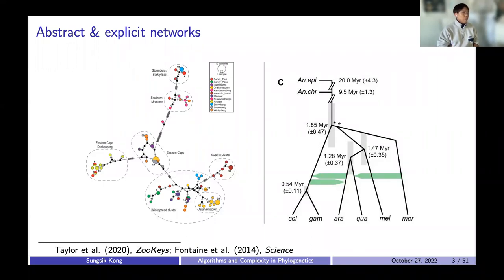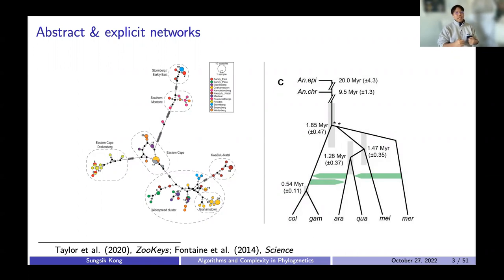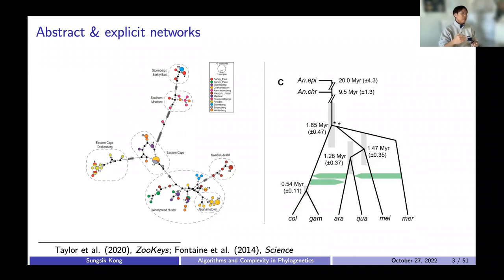An abstract network looks very different from the typical phylogenetic tree that we know of, but it's very colorful where different colors represent different haplotypes or different sequences, which means abstract networks can work with large data sets that contain many sequences. On the other hand, explicit networks look very similar to the typical phylogenetic tree, but have horizontal edges between tree branches denoting complex evolutionary processes like gene flow or hybridization. But explicit networks have a much fewer number of tips compared to abstract networks, because estimating explicit networks lacks scalability — the computational time becomes infeasibly large as the number of sequences or reticulations increases.